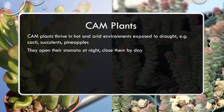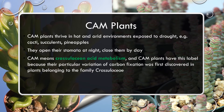CAM plants also tend to be very thick and juicy, storing a lot of water in the leaf. CAM actually stands for Crassulacean Acid Metabolism, named after the Crassulacean cactus family - you can see one on the left. This family was the one in which this type of carbon fixation was first discovered.